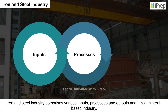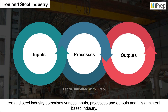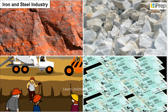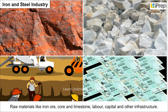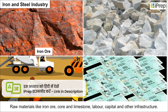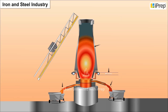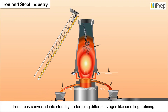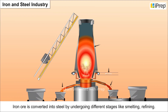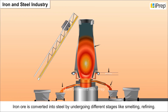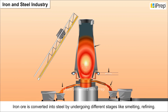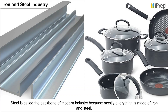The iron and steel industry comprises various inputs, processes, and outputs, and it is a mineral-based industry. Inputs include raw materials like iron ore, coke, and limestone, along with labor, capital, and other infrastructure. In the process, iron ore is converted into steel by undergoing different stages like smelting and refining.